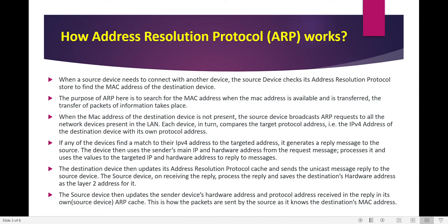When the MAC address of the destination device is not present, the source device will broadcast an ARP request to all network devices present in the LAN. Each device in turn will compare the target protocol address — that is the IPv4 address of the destination device — with its own protocol address. If any device finds a match to its IPv4 address with the targeted address, it will generate a reply message to the source. The device will then use the sender's IP address and hardware address from the request message and process it.